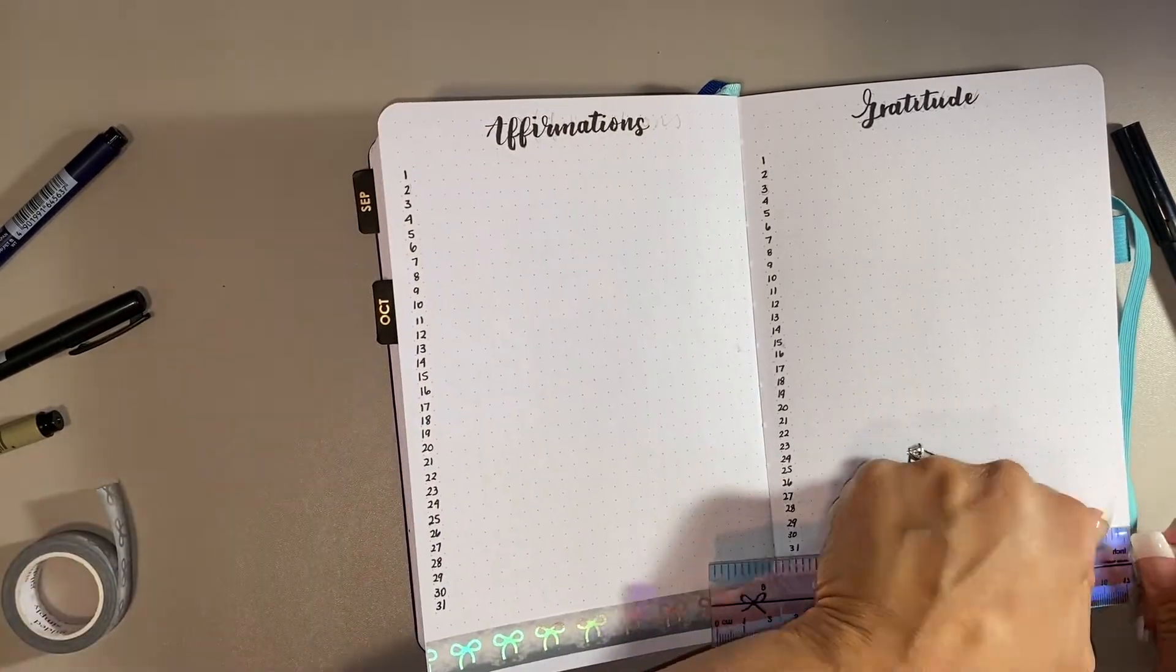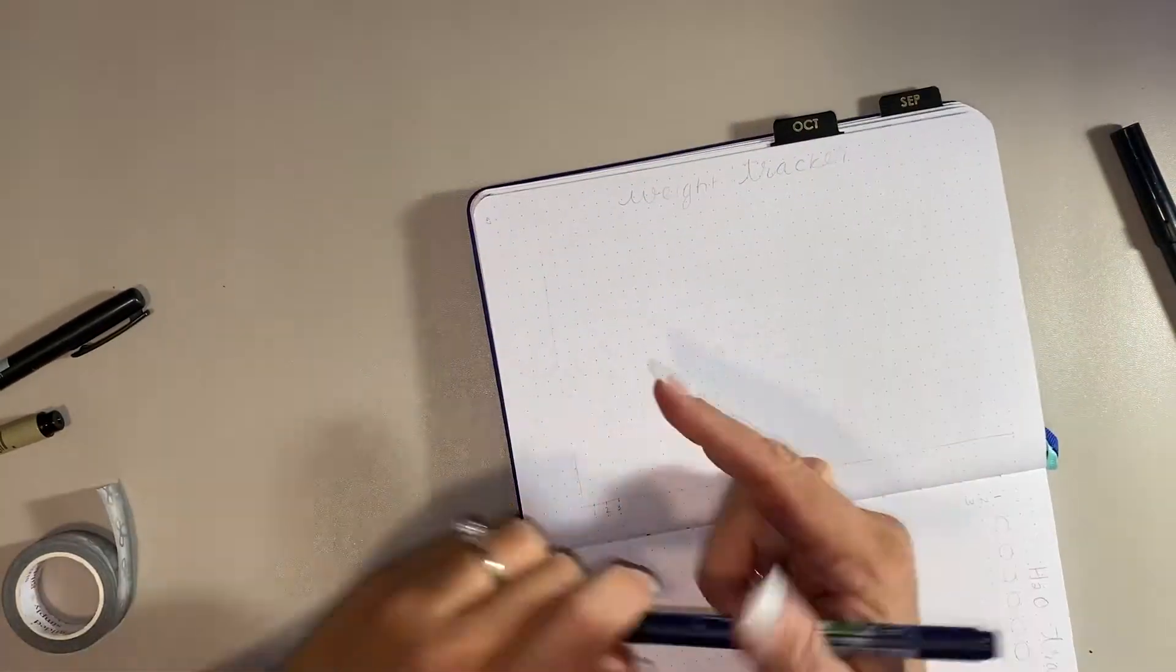Very, very easy. I just add the numbers 1 to 31 along the side, and then each day I fill out one line.